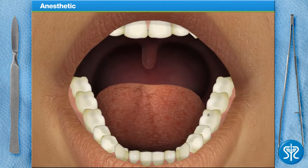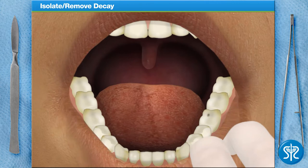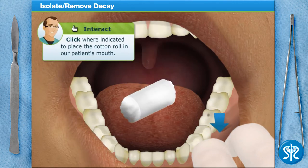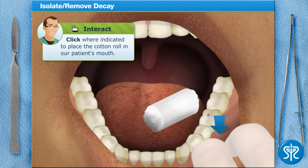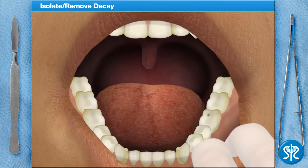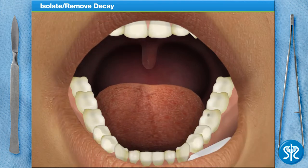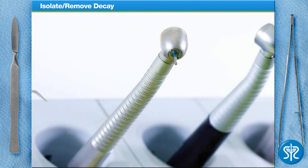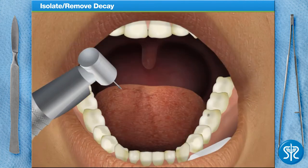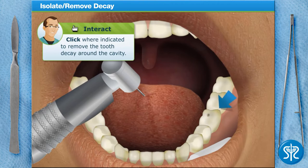Now that our patient's mouth is numb, we can move on to removing the decay. To begin, we'll need to isolate the tooth using a cotton roll — this will give us some space to work. Dentists typically remove tooth decay with a burr inserted into a handpiece; this is what most people refer to as the drill. Prepare the area by using the burr to carefully remove all of the decay from our patient's tooth.